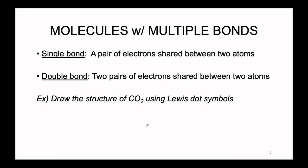A single bond is a pair of electrons shared between two different atoms. A double bond is twice that — two pairs of electrons shared between two atoms. We're going to draw the structure of carbon dioxide using the Lewis dot symbol approach, and it will be clear where these higher-level double bonds come from.